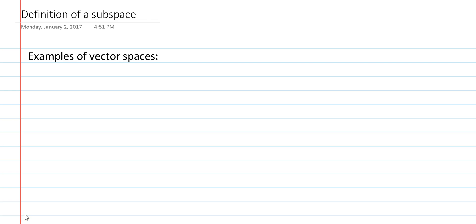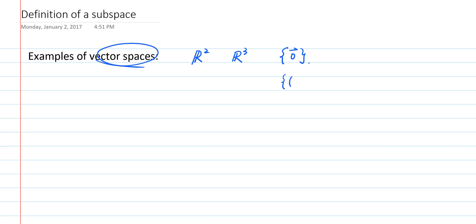In previous videos, we learned about vector spaces. For example, we learned that Euclidean spaces R2 and R3 are common vector spaces. We also learned that the set containing a single vector — the zero vector, where for example the zero vector is the two-tuple of zeros — is also a vector space.